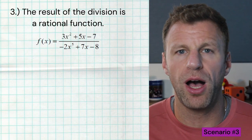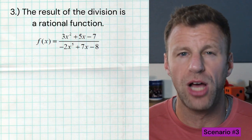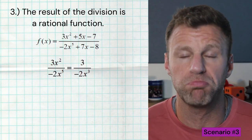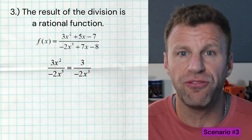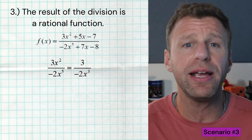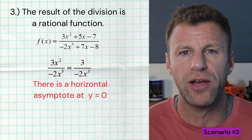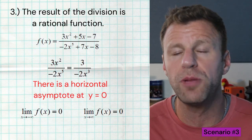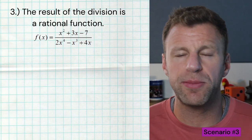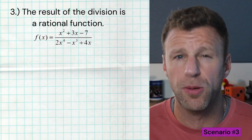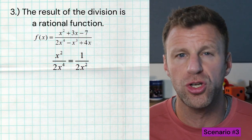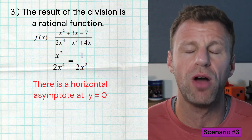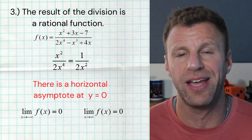In this example, we take the leading term of the numerator, 3x squared, divided by the leading term of the denominator, negative 2x to the fifth, and we get 3 over negative 2x to the third — a rational function. We have x's left in the denominator, which instantly tells us: horizontal asymptote at y equals zero, and end behavior to both the left and right are zero. In the next example, x squared divided by 2x to the fourth results in 1 over 2x squared — a rational function — again informing us of a horizontal asymptote at y equals zero, and both end behaviors are zero.